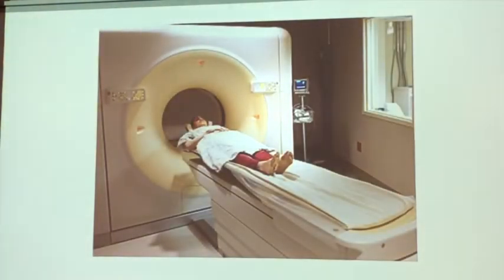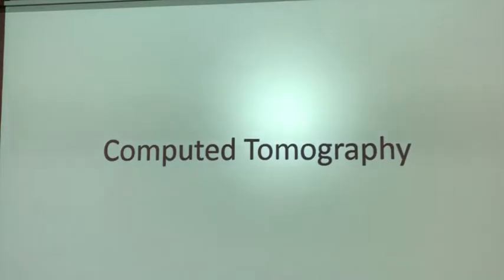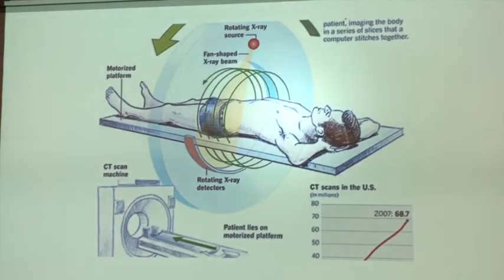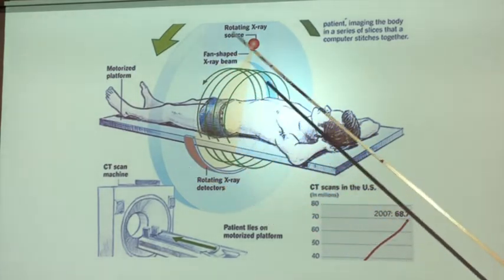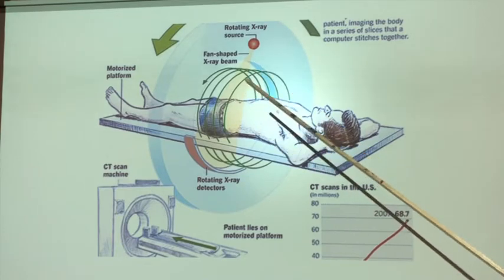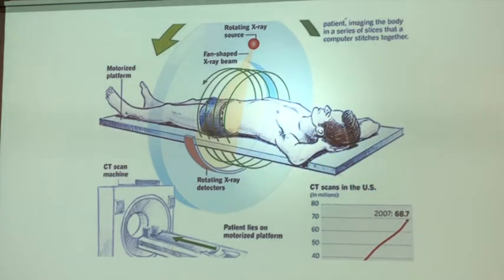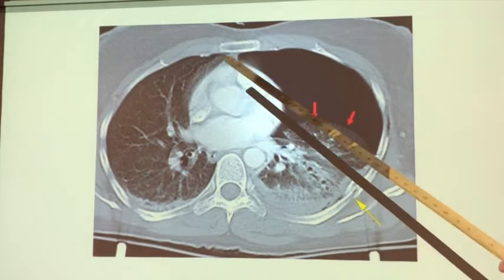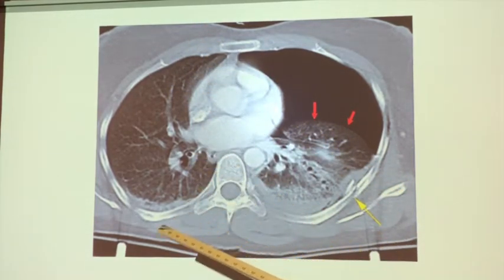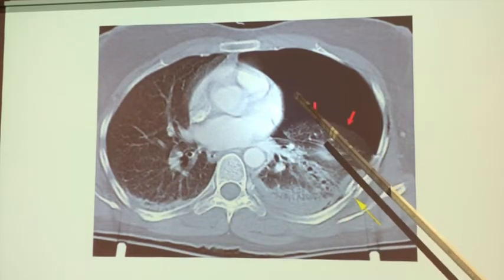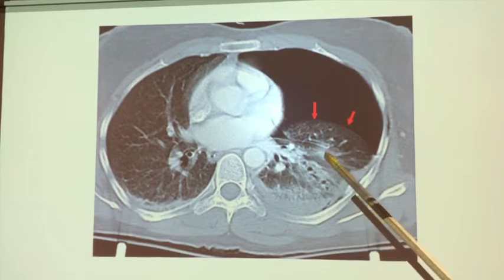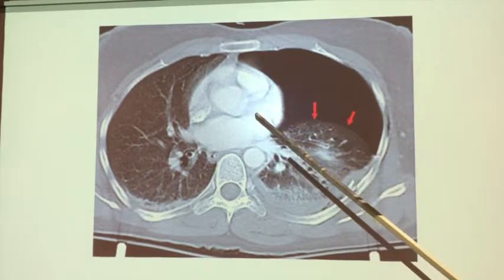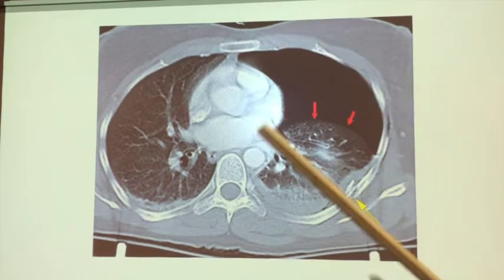This patient had a CT scan. CT stands for computerized tomography — it takes a rotating x-ray from different angles so you can do a cross-section through the body, and the computer gives you an image. This is a CT of that patient. Pretend you're at the feet looking up: this is the heart, the spine, the right lung, and the left lung. You can see a rib fracture, the collapsed lung, and air in the thorax.